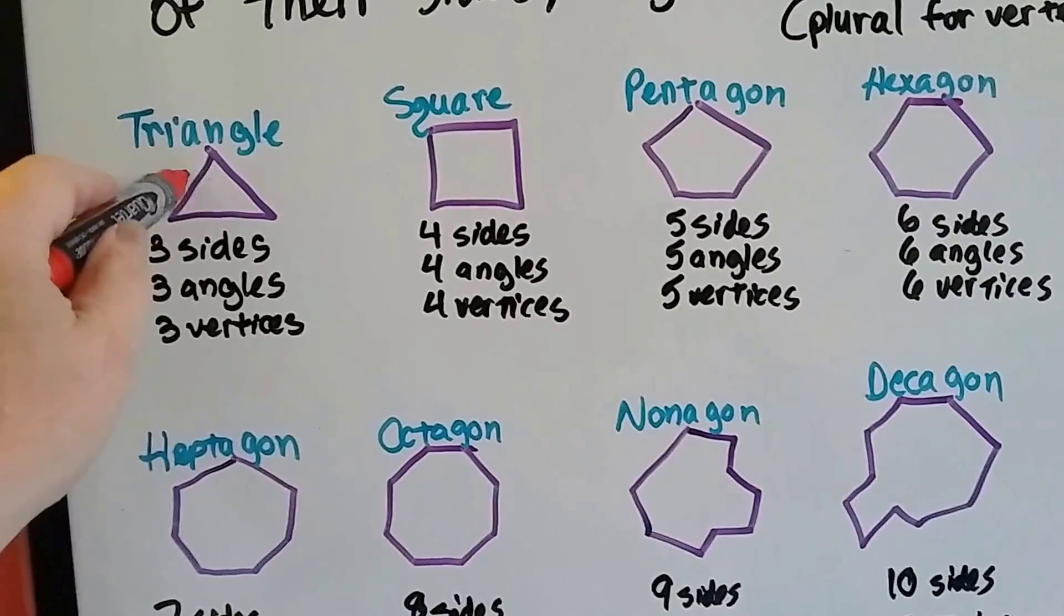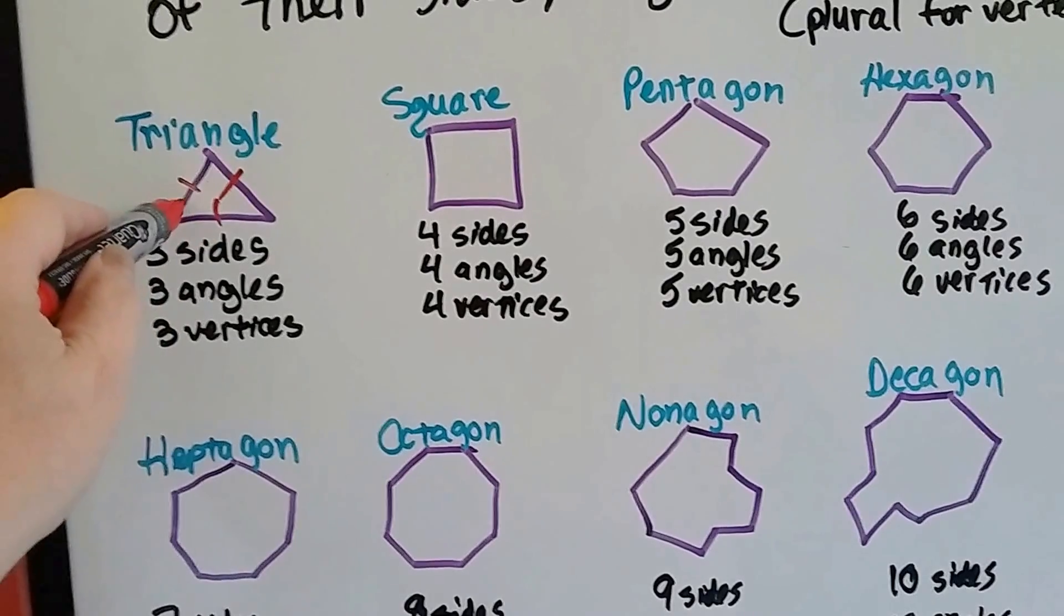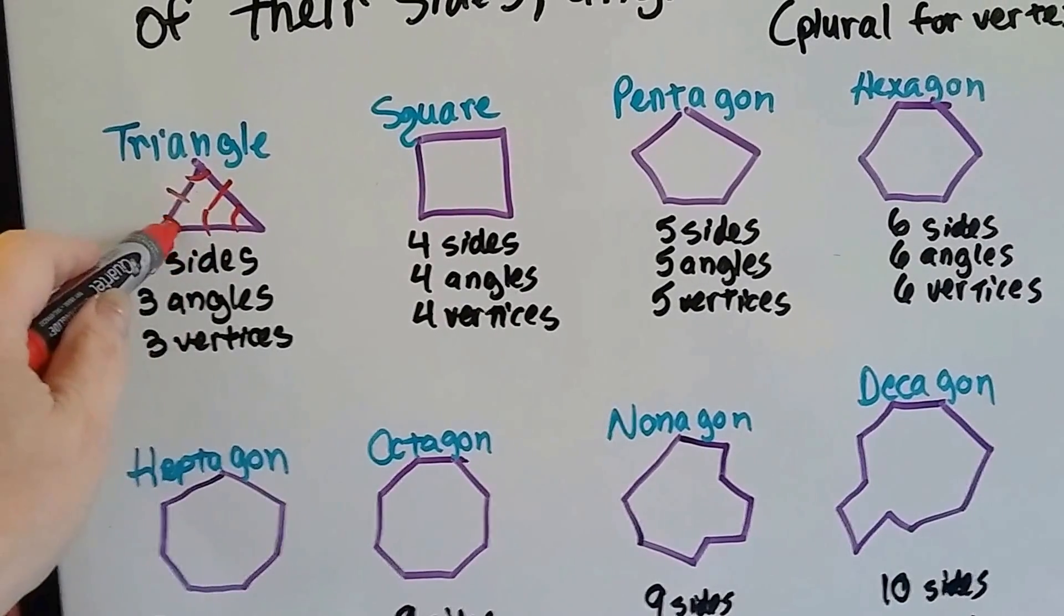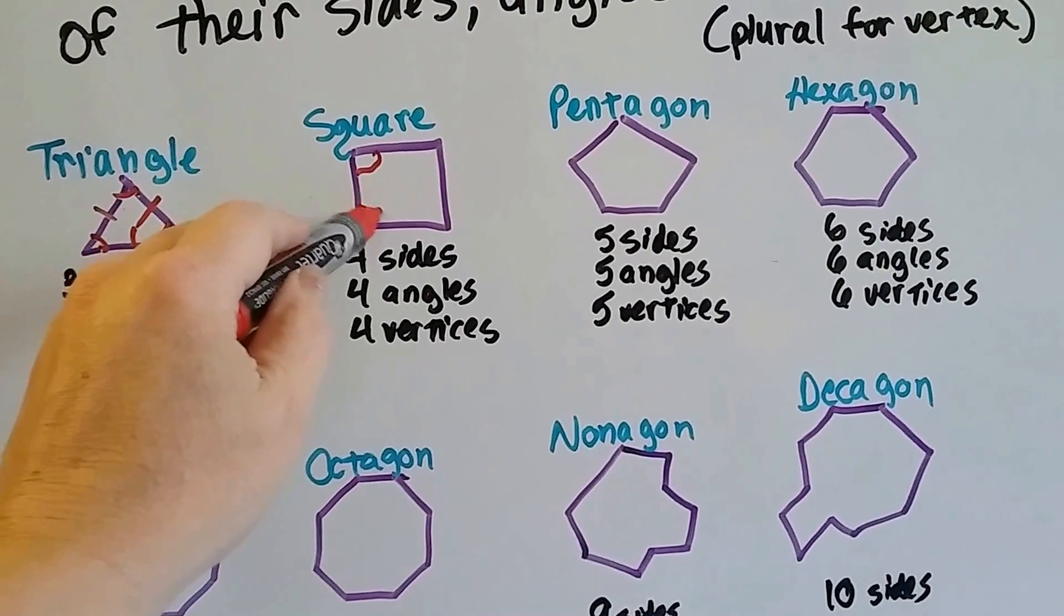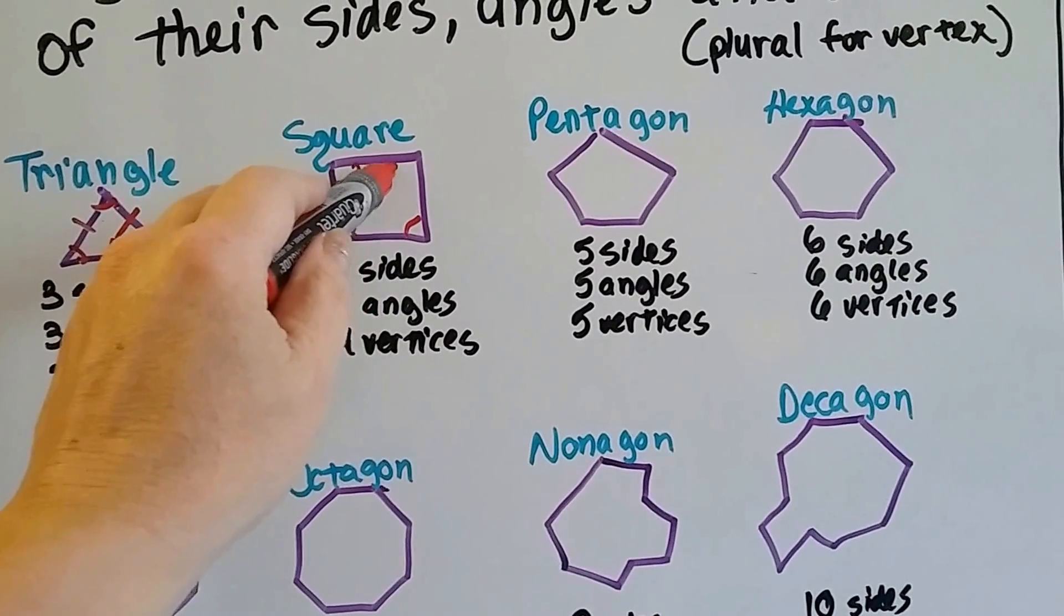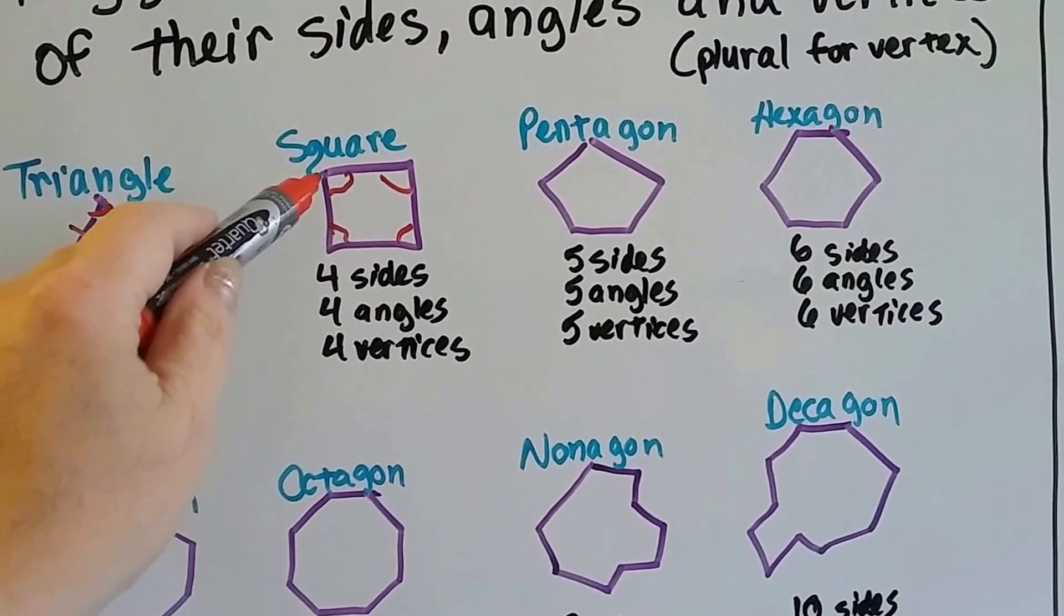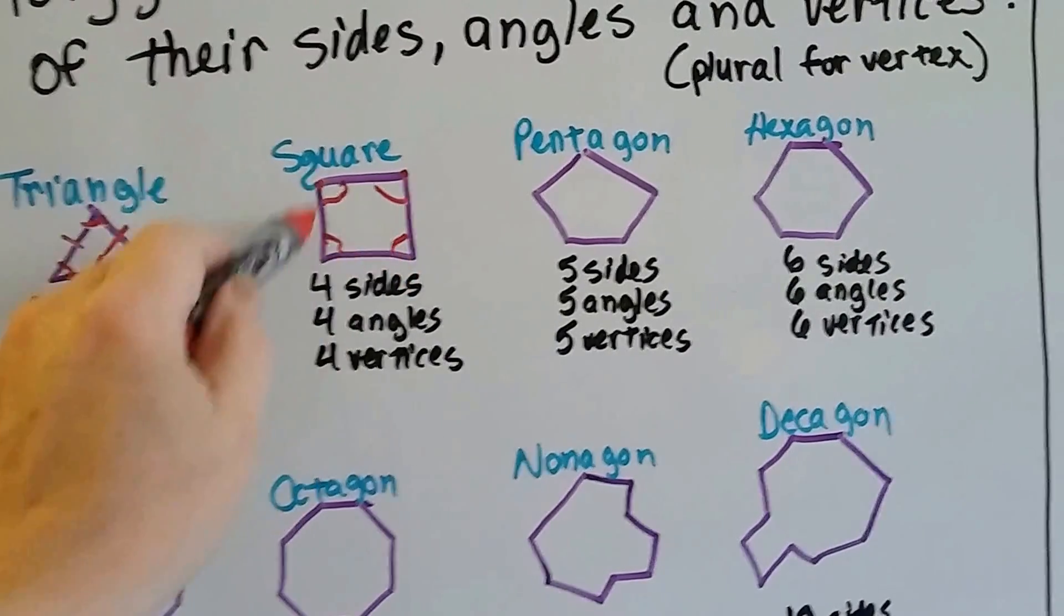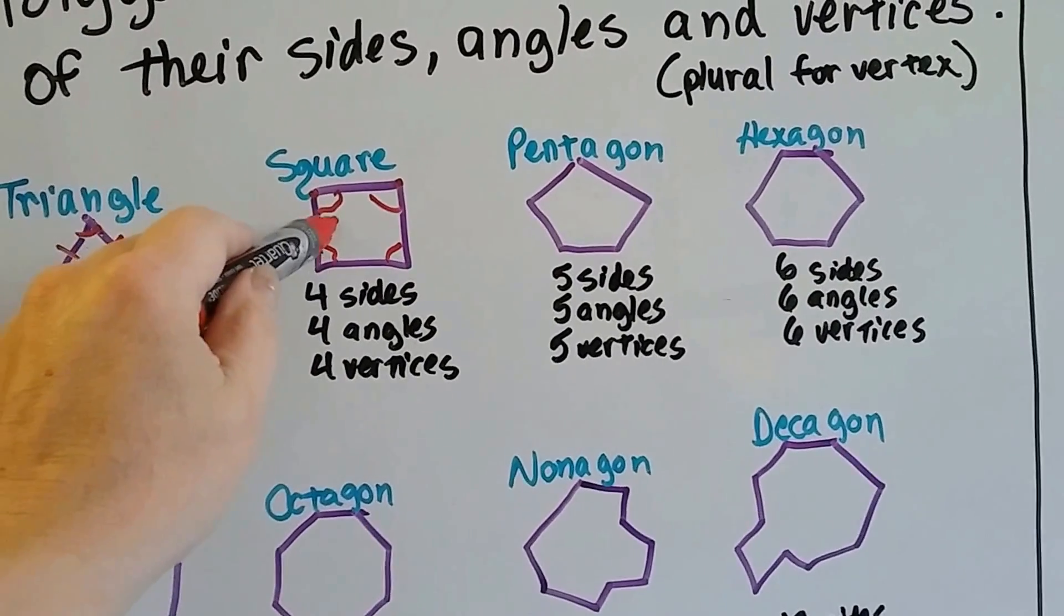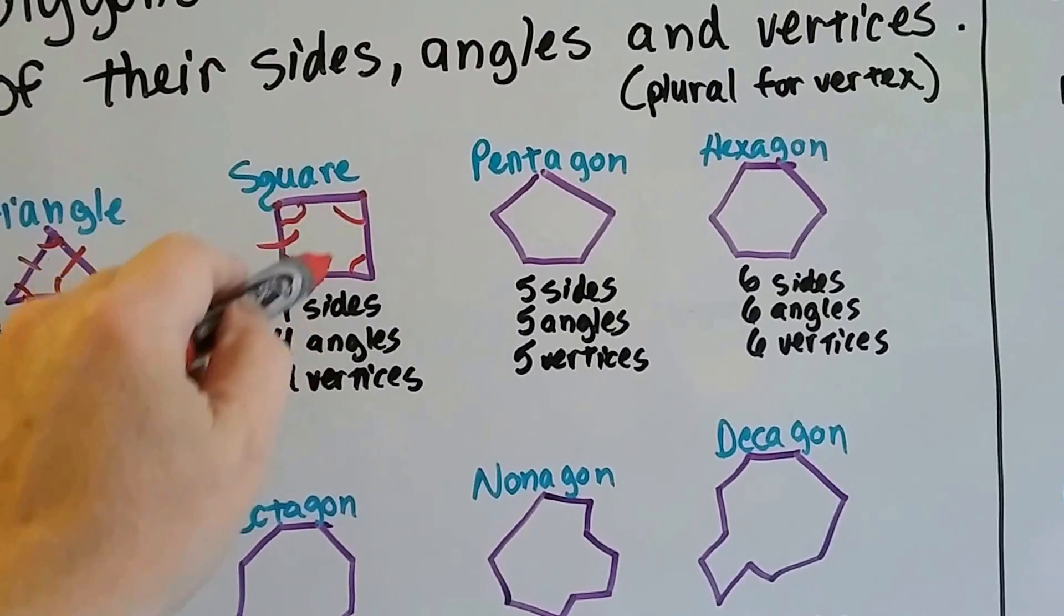So here's a side, and here's the vertices right here, each corner. Square has 4 vertices. Each of these corners, there are vertices. It's got 4 angles, and it's got 4 sides, 1, 2, 3, 4.